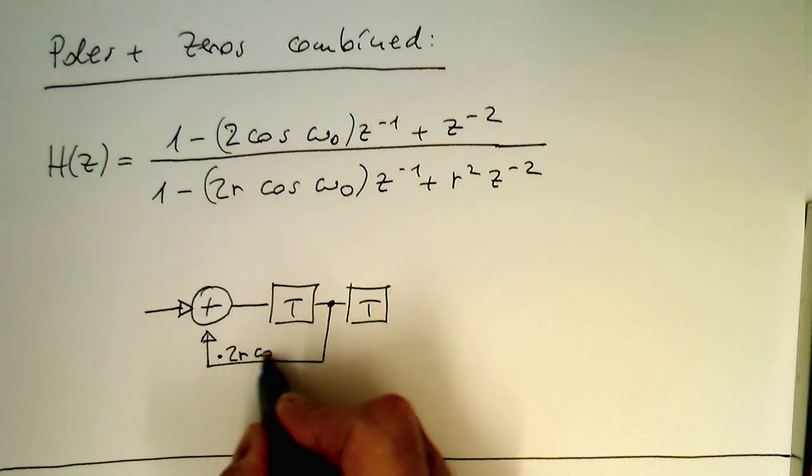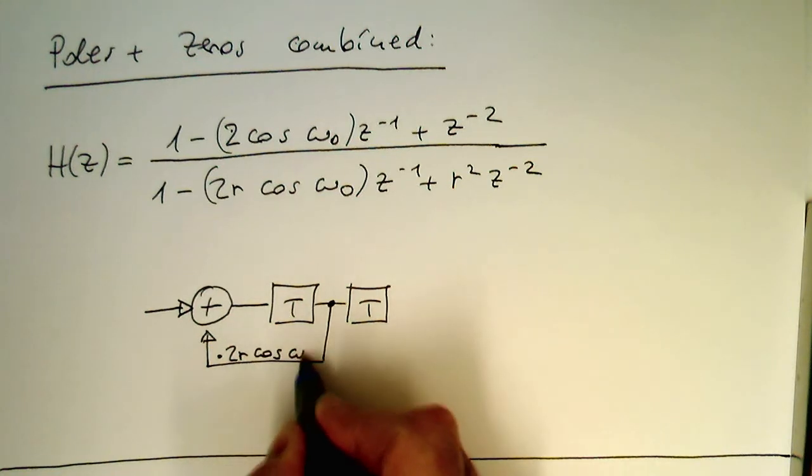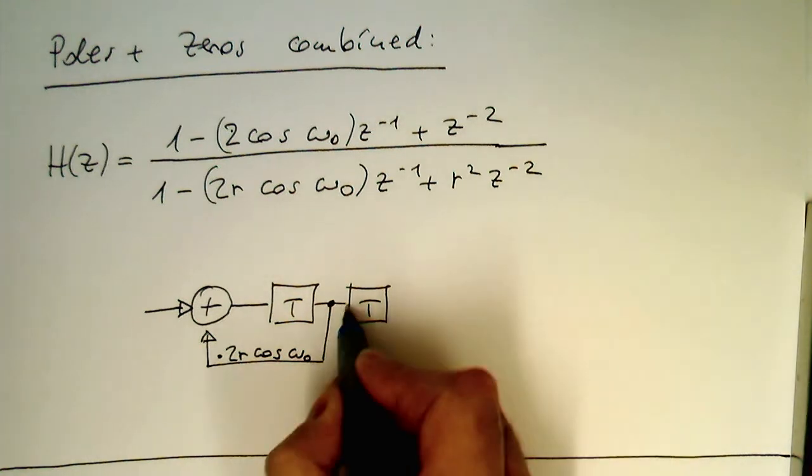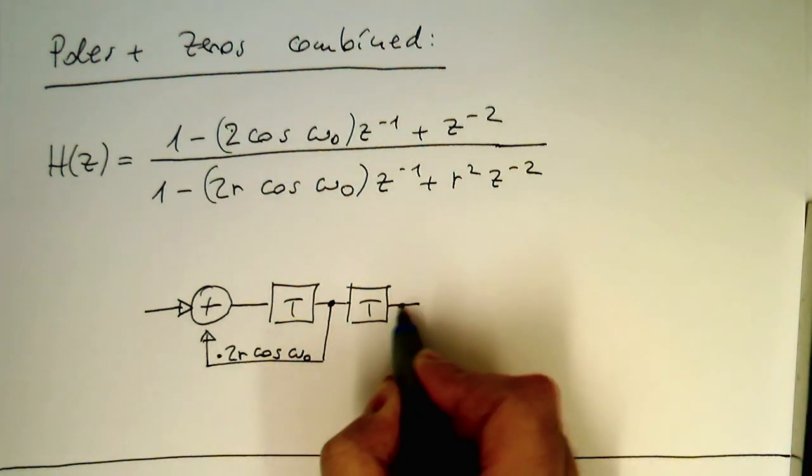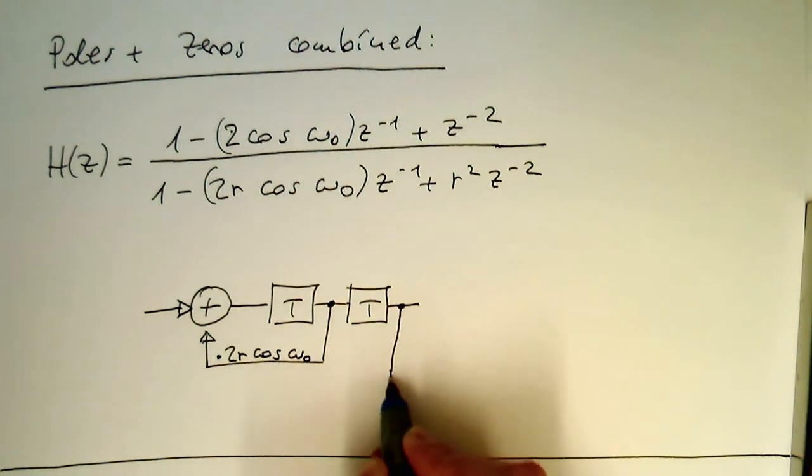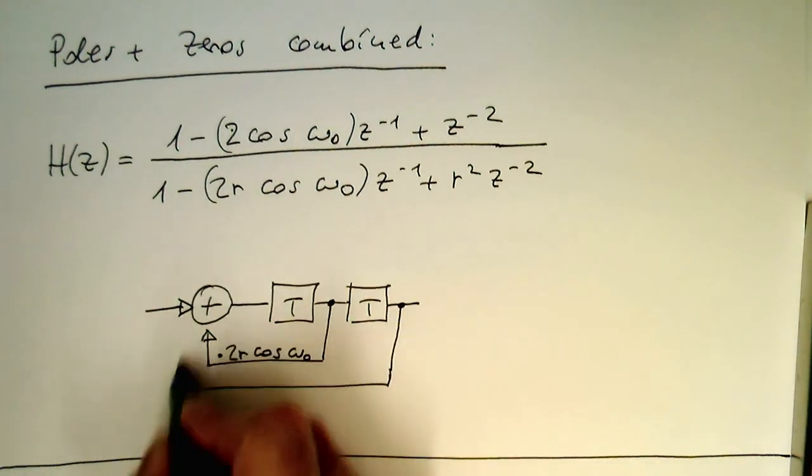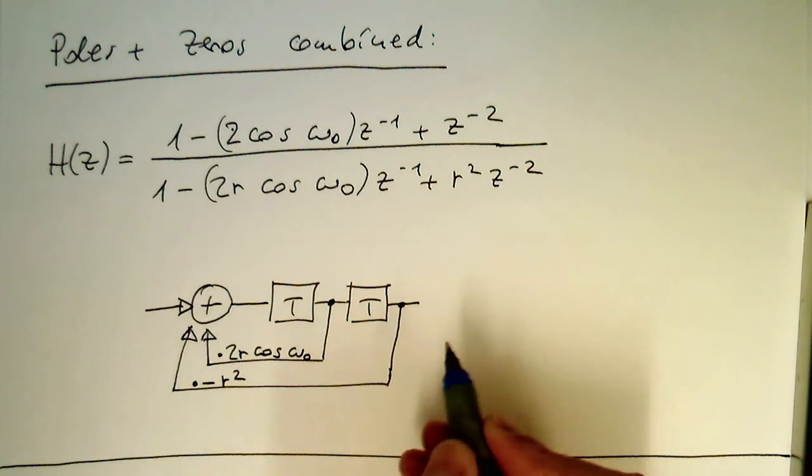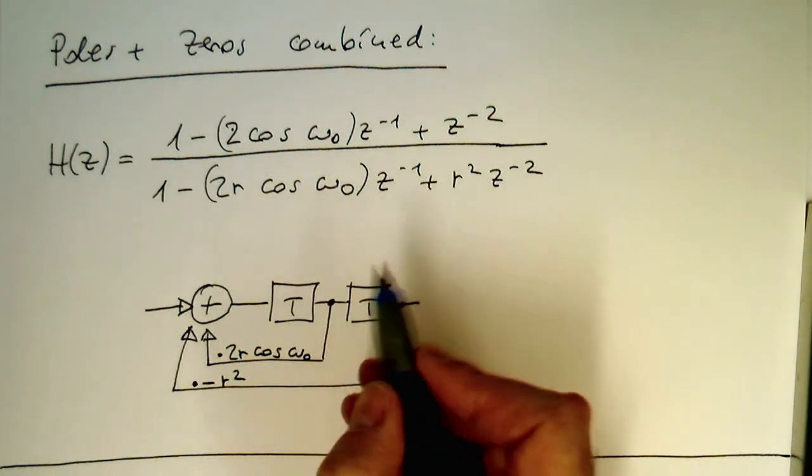And we know that this negative sign in this case goes away. So this gives us two cosine omega zero in the multiplication of this pathway here. Then the delayed version here by two time steps. This subtracts r square. So in this case we are multiplying this here with minus r square.